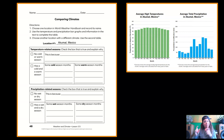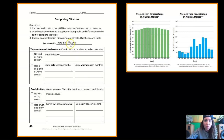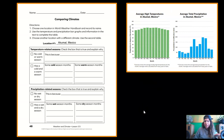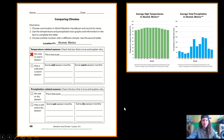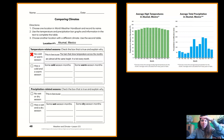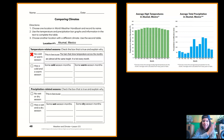Did you complete page 48? Great — let's go over the answers. For location one, I've written Akumal, Mexico. For the temperature-related season, looking at the temperature graph, do we think there's no cold or warm season, or that it has a cold and warm season? I put no cold or warm season, because the bars showing temperature across the months are almost all the same height — it's hot every month. We don't see that up-and-down pattern. It's just hot across the board.